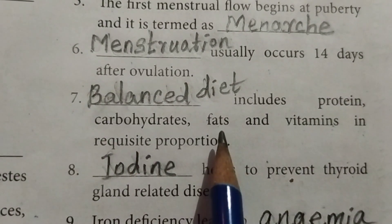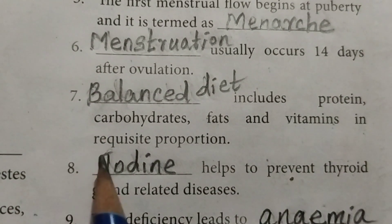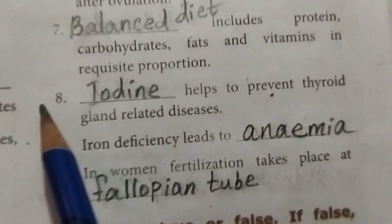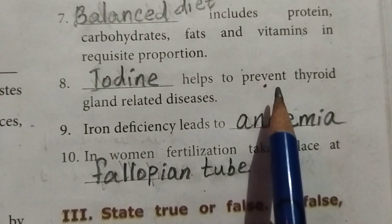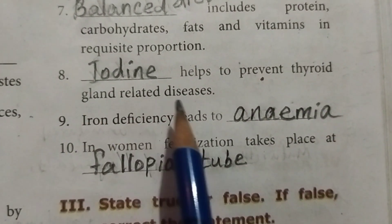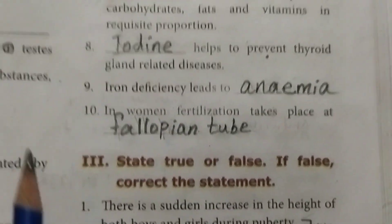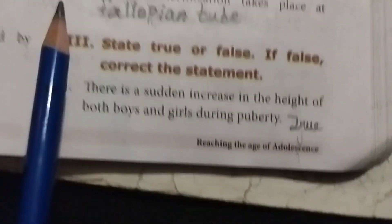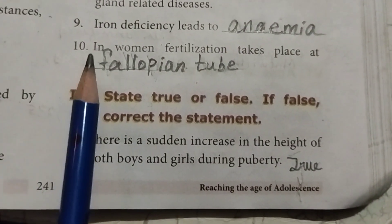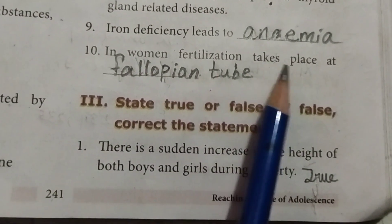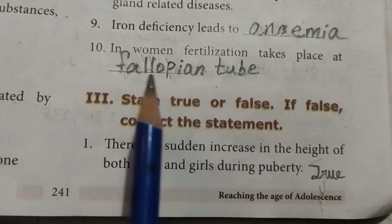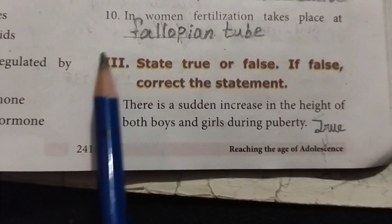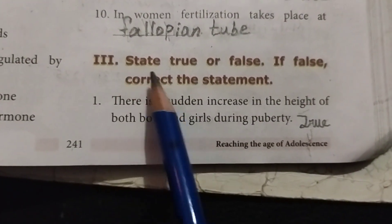Question 6: Blank usually occurs 14 days after ovulation. Answer: Menstruation. Question 7: Blank includes proteins, carbohydrates, fats and vitamins in requisite proportion. Answer: Balanced diet. Question 8: Blank helps to prevent thyroid gland related disease. Answer: Iodine. Iodine deficiency leads to anemia. Question 10: In women, fertilization takes place at blank. Answer: Fallopian tube.